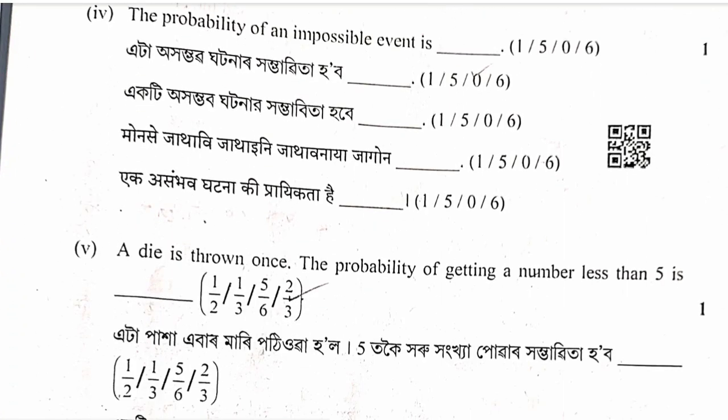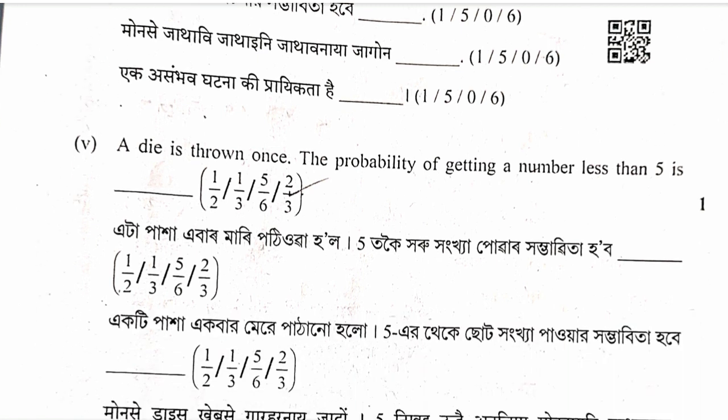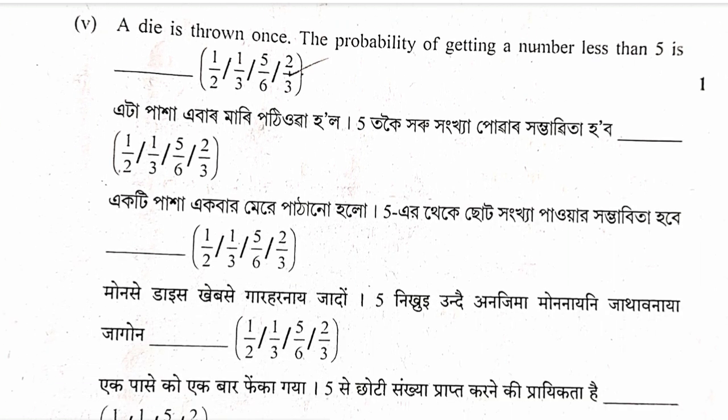Question: The probability of an impossible event is zero. Question: A die is thrown once, find the probability of getting a number less than 5. There are 4 favorable outcomes out of 6, so probability equals 4 by 6 equals 2 by 3.